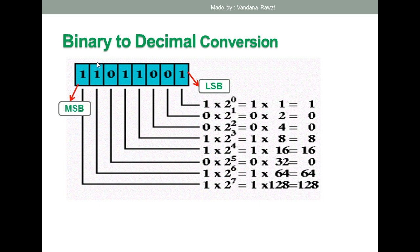In step one, we start multiplying each binary digit with 2 to the power, starting from 2 to the power 0, then 2 to the power 1, 2 to the power 2, and so on. We always start from the LSB digit.